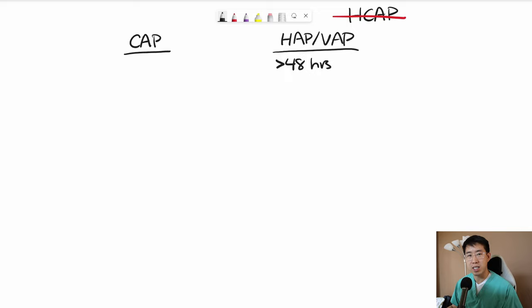Then this is defined as HAP and they will require broader spectrum antibiotics. And then ventilator-associated pneumonia is clearly if they're intubated, then they will also need broader spectrum antibiotics.